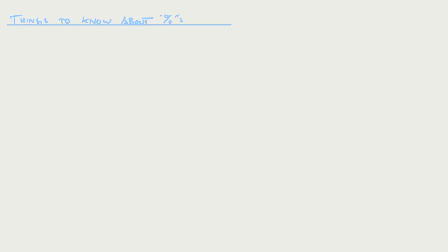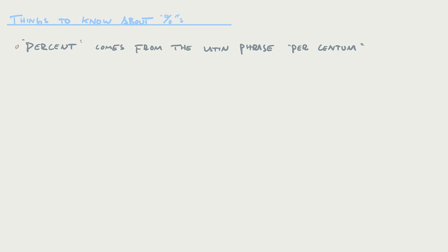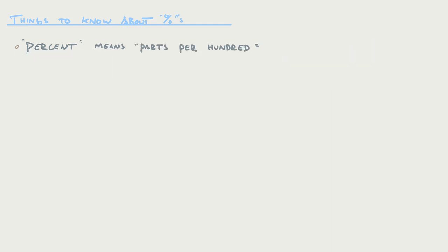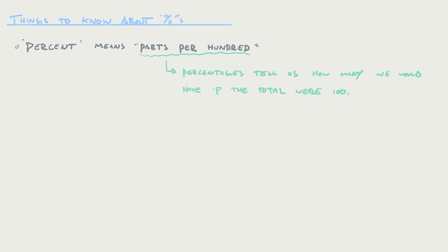We're going to start off by talking about some things to know about percentages. The first one is its meaning. Percent basically means per 100. It comes from the Latin phrase 'percentum,' which breaks down as per 100. I like to think about percentages as parts per 100, which means a percentage tells you how many we would have if the total were 100.